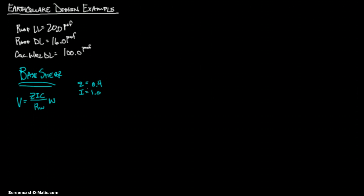Remember, this is the UBC design code that we're using. The importance factor I can be found in Table 16-K on page 84. We'll go ahead and assume it's 1.0, which is typical unless you have a reason otherwise.